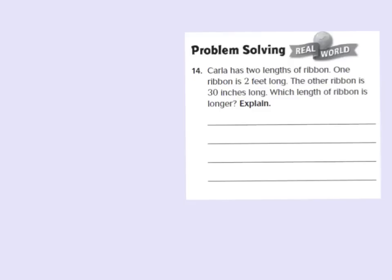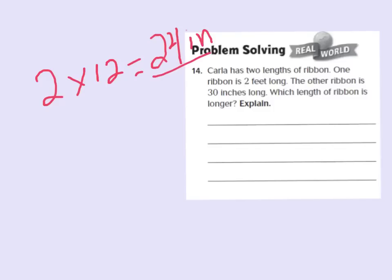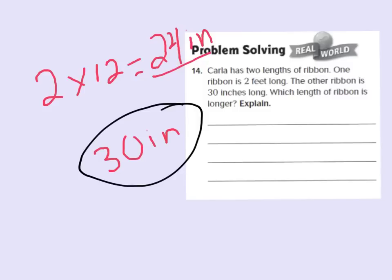I know that in 1 foot there are 12 inches. So with 2 feet, I can say 2 feet times 12 inches, and that gives me 24. So her first ribbon is 24 inches long and the second ribbon is 30 inches long. Since 30 inches is longer than 24 inches, the 30-inch ribbon is the longer ribbon.